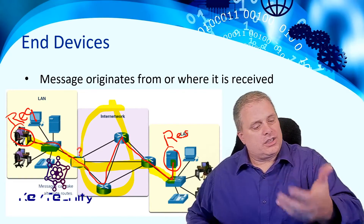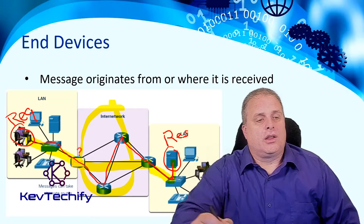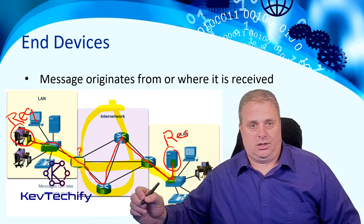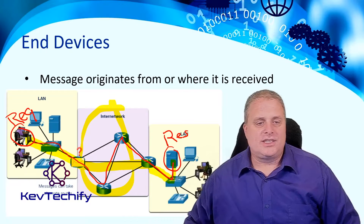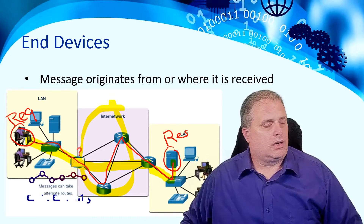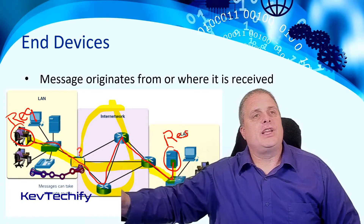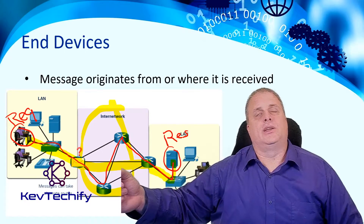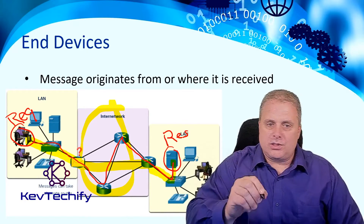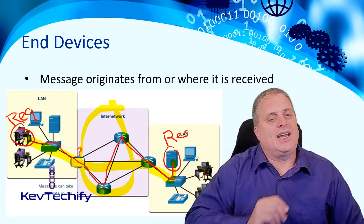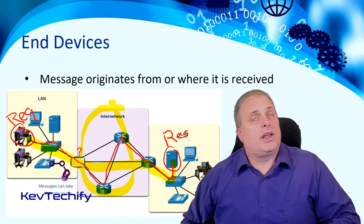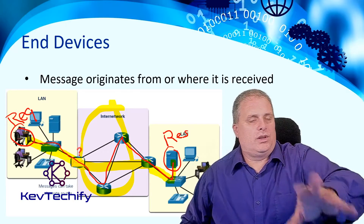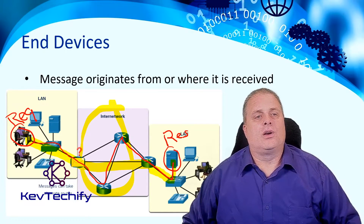The key thing to remember is: end devices are where data starts and stops. Data starts on your cell phone or, in this example, the gentleman on the left side making a request. It travels through the network — none of those devices it passes through are end devices. When it gets to the server on the right side, that's where the data stops and gets processed. The response starts there and travels back, and once it returns to the gentleman on the left, that's where the data stops again. Where data starts and stops on your network — those are end devices.